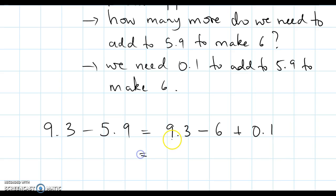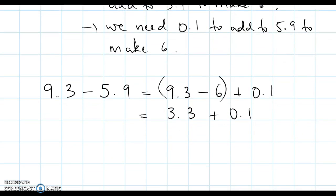Okay. Now, bracket those. 9.3 take away 6 is 3.3 plus 0.1. 3.3 plus 0.1 is 3.4. Okay. So therefore, 9.3 take away 5.9 equals 3.4.